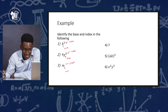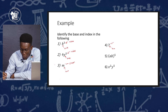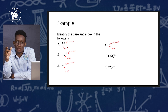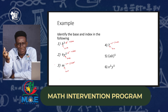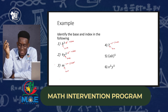The same thing goes for 7 — 7 would be the base, and once again we don't see a power, but we know it's 1. As you can see, I'm using the word power and index interchangeably because they both mean the same thing. You can use whichever one you're comfortable with, but just know that they both mean the same thing.